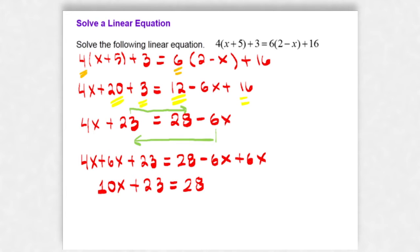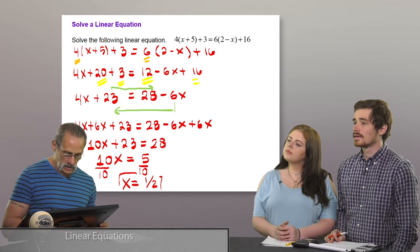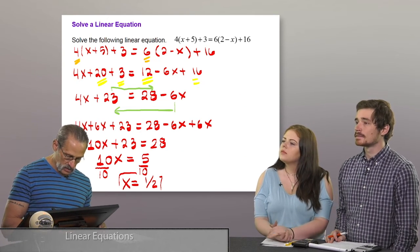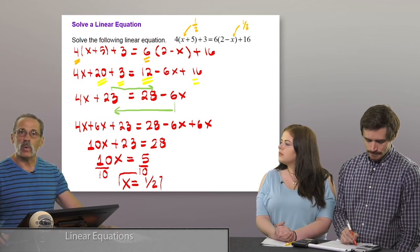Now divide both sides by 10: x = 5/10 = 1/2. To check, substitute 1/2 back into both sides of the original equation — put 1/2 in place of x and verify you get a true equation.